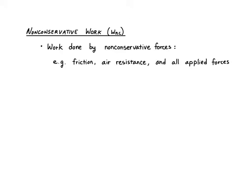Another property of non-conservative work is that the amount of work depends on the path taken. For example, with friction, if you move something a long way versus the short way, there will be more work done by friction over the longer path because there is more distance traveled. Finally, non-conservative work is lost by the system.